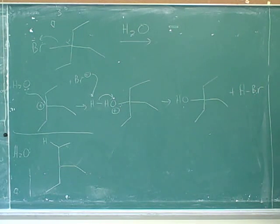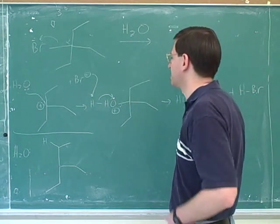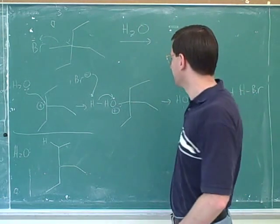Because we have a tertiary alpha carbon and we have a poor nucleophile. Yeah, neutral oxygen. Okay, all right. So surprise, we're doing an SN1 and E1.